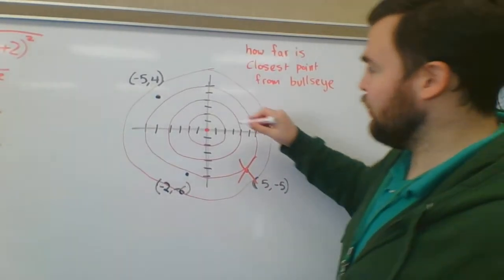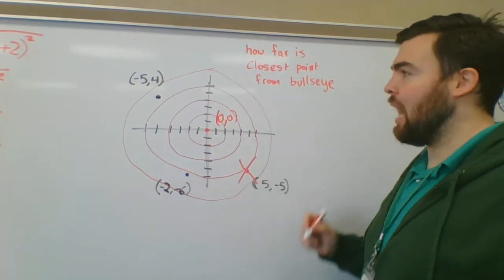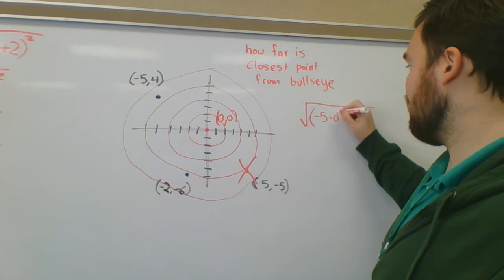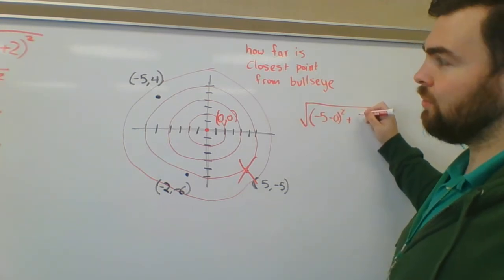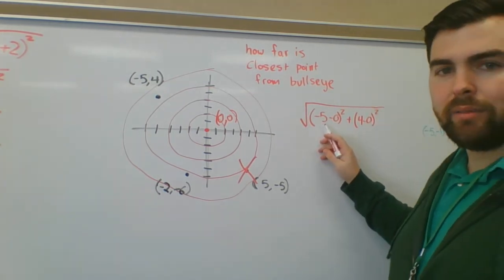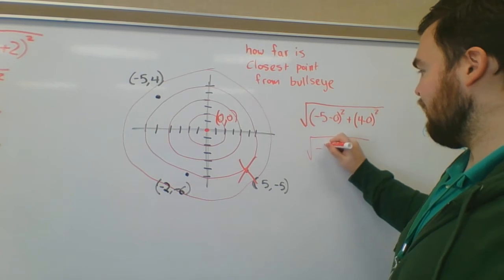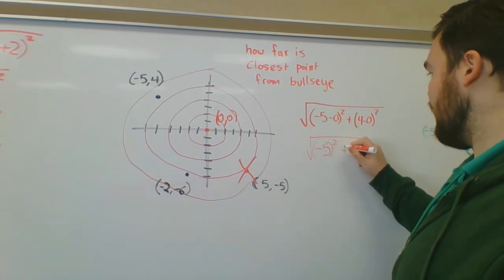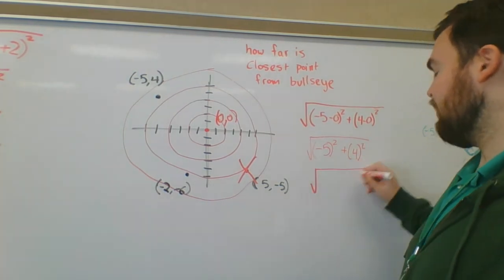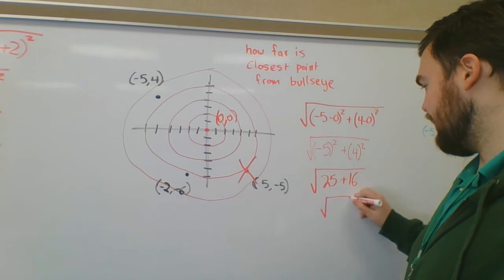Let's find the distance from (0, 0) to (−5, 4): √((−5 − 0)² + (4 − 0)²). Since we're subtracting zero, this simplifies to √((−5)² + 4²) = √(25 + 16) = √41.